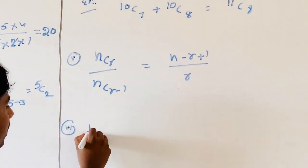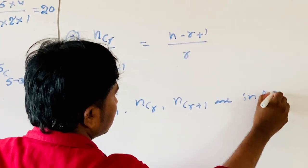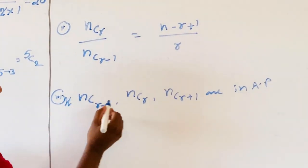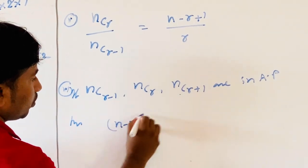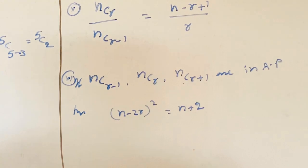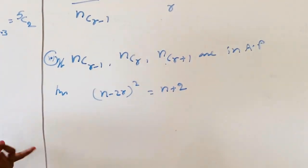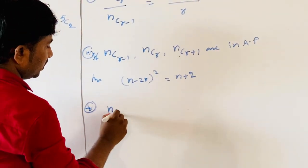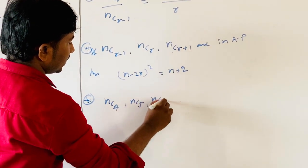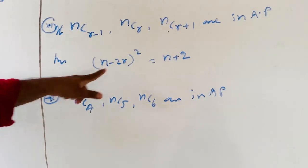Next formula: if NC(R−1), NCR, NC(R+1) are in AP, then (N−2R)² = N+2. For example, if NC4, NC5, NC6 are in AP, find N. Applying the formula with 2R−1 substituted accordingly gives (N−2R)² = N+2.